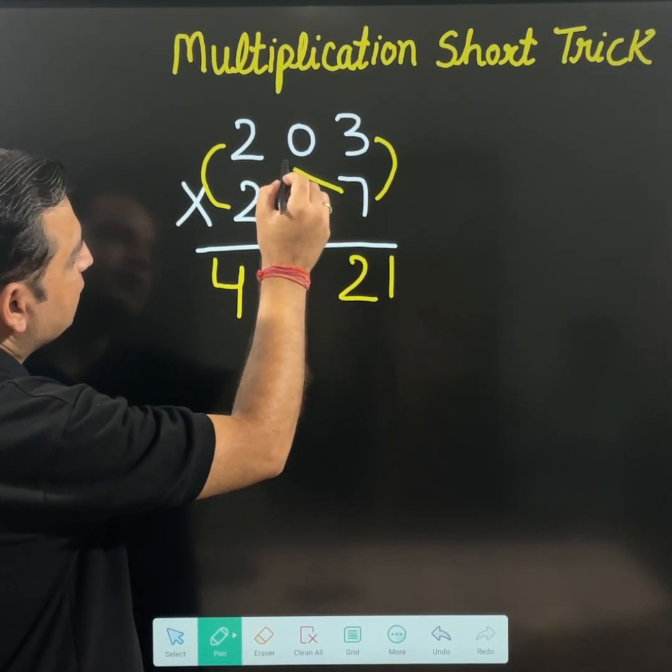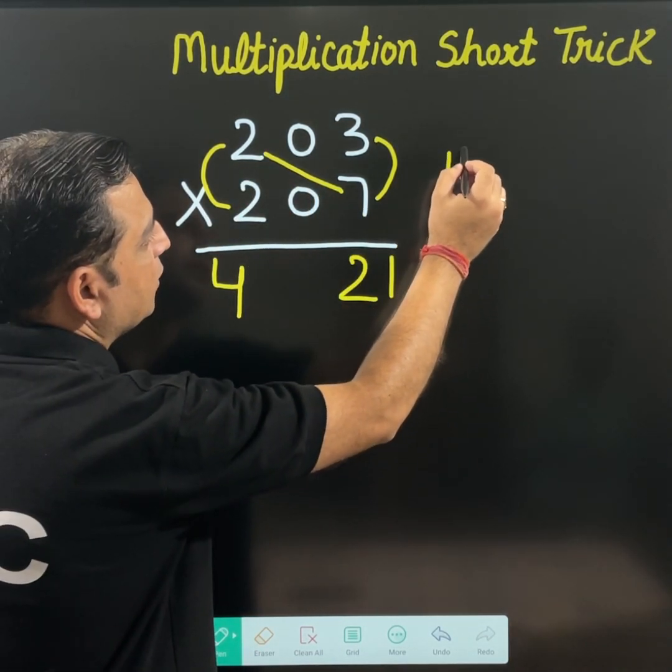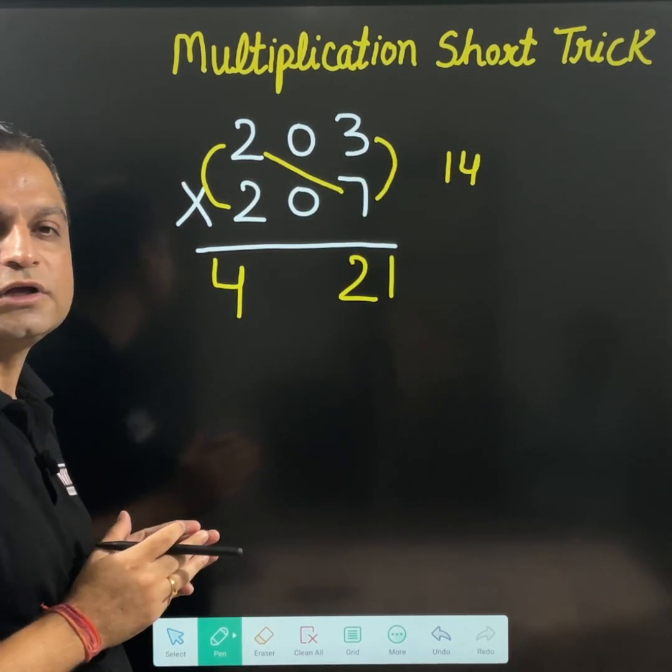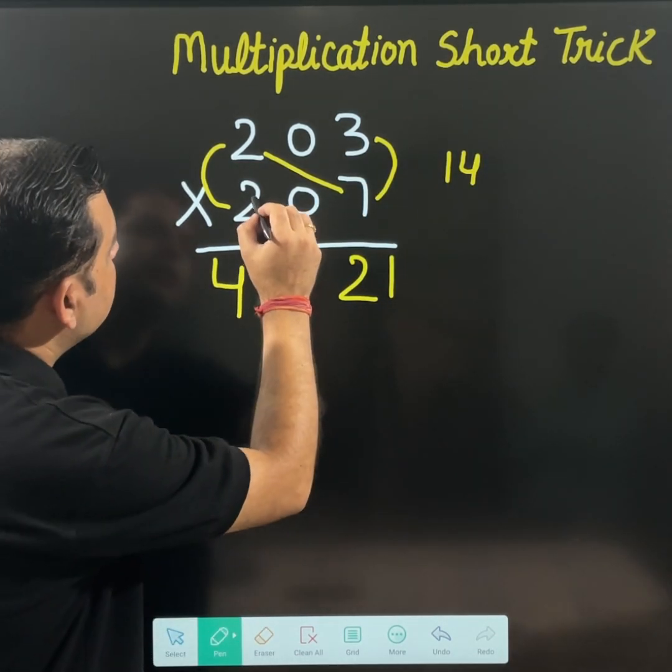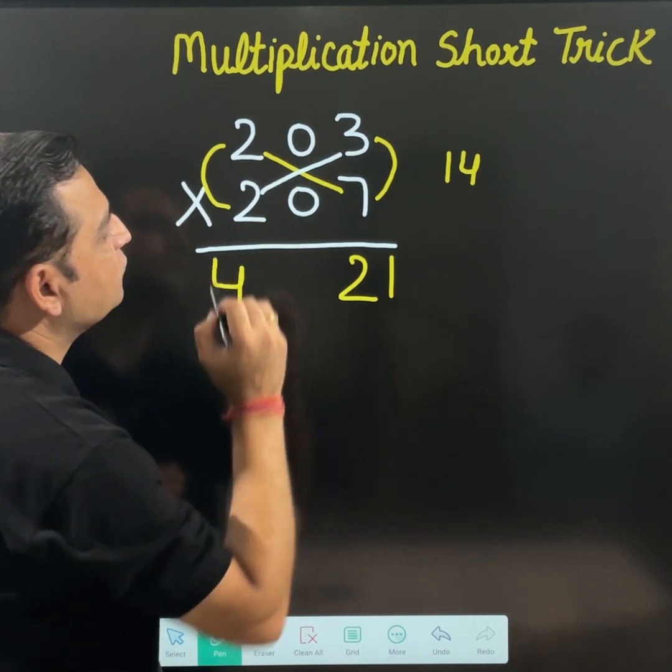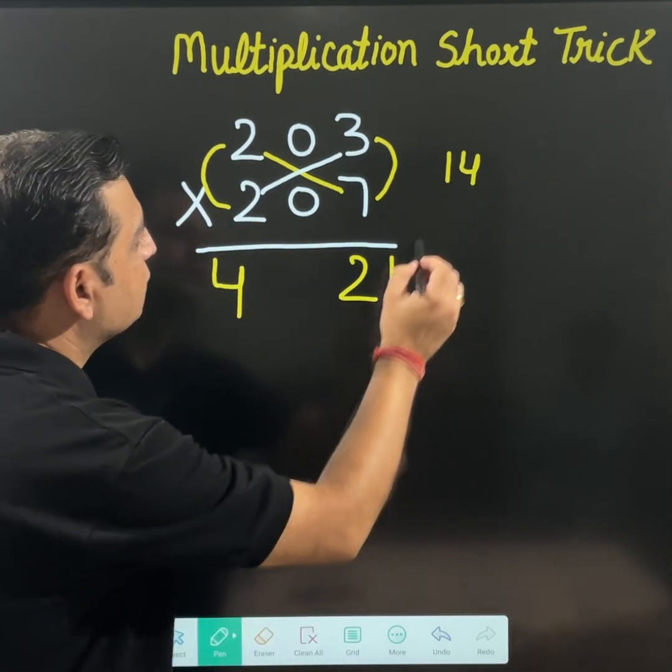Just cross multiply, like 7 and 2. If they are multiplied, you will get 14. And on this side, if 2 and 3 is multiplied, you will get 6.